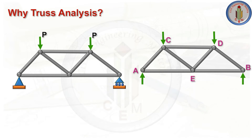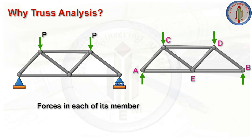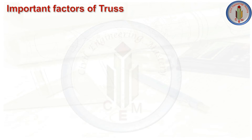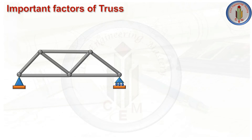To recap: we do truss analysis to find out the forces in each member, which is used to check whether the member cross-section provided is sufficient to carry the load without any failure. This is the major reason why we do truss analysis. An important factor: trusses are used to resist external deformation due to external loads.